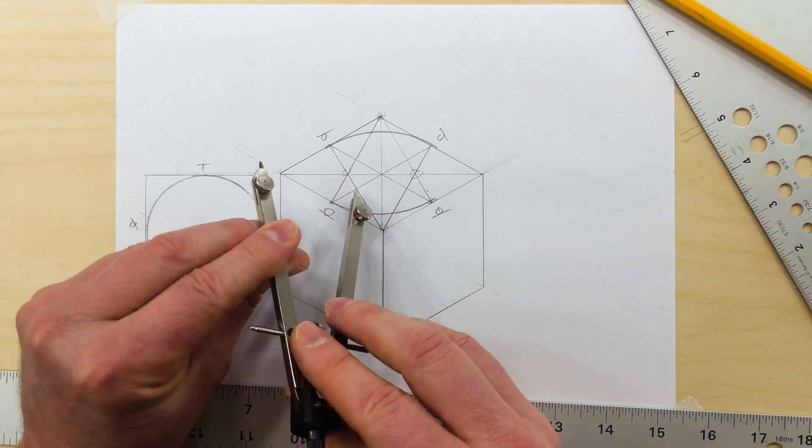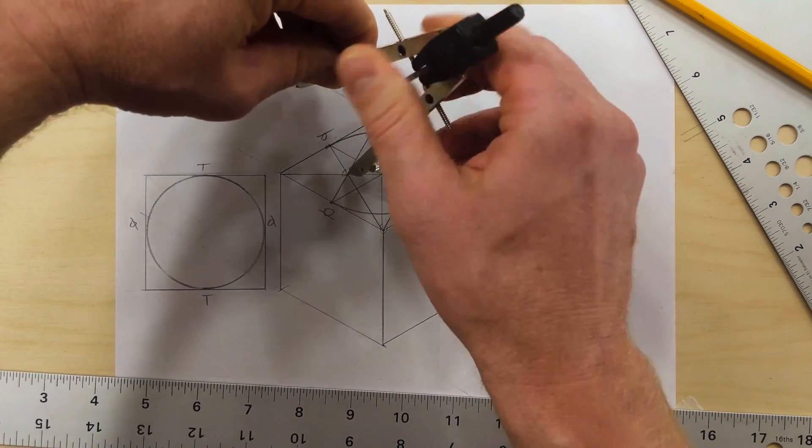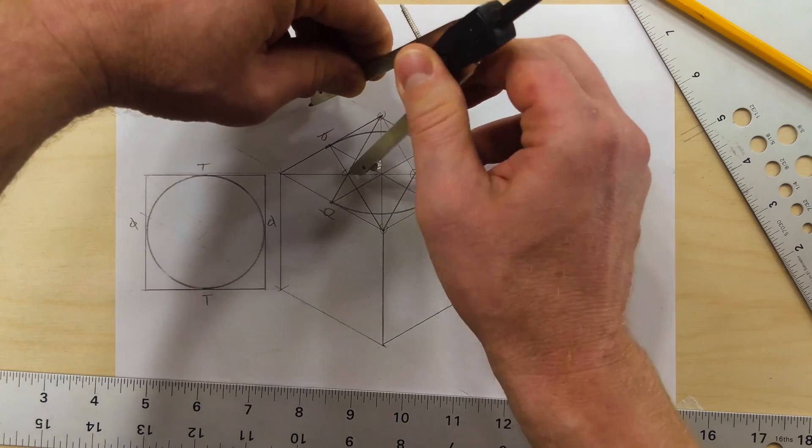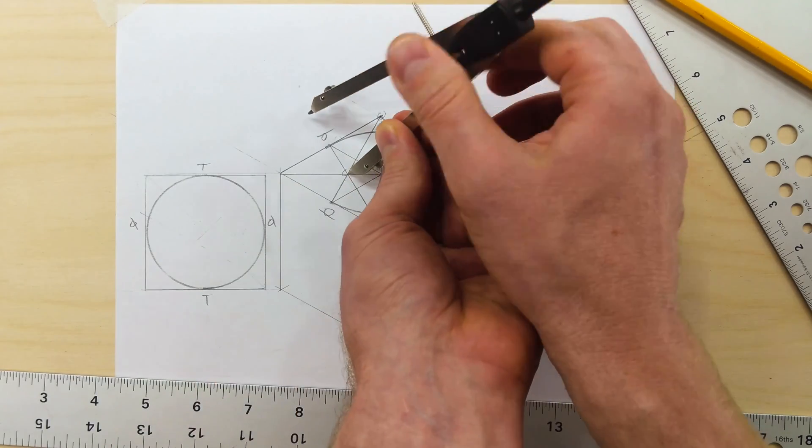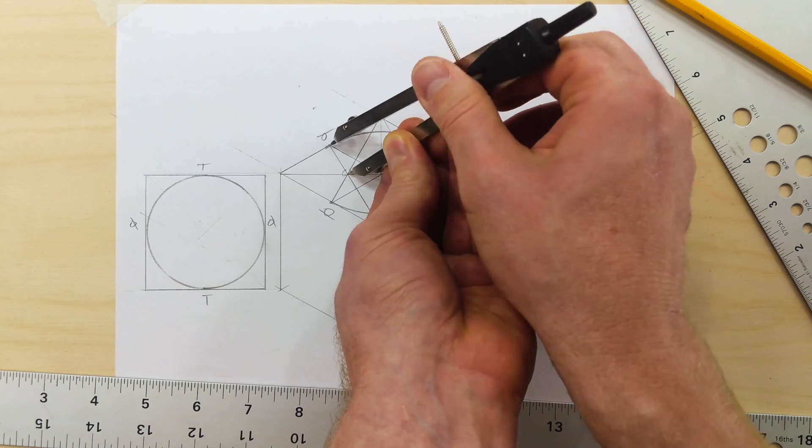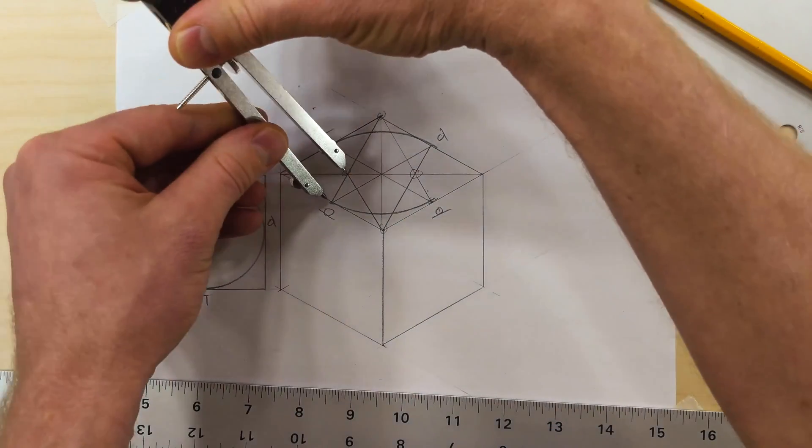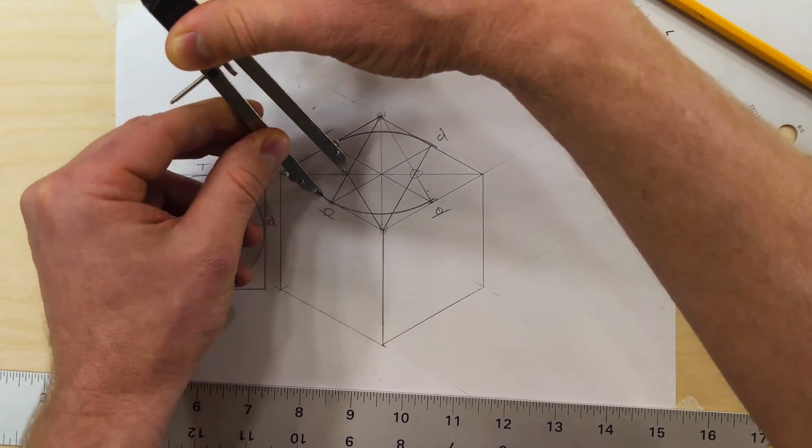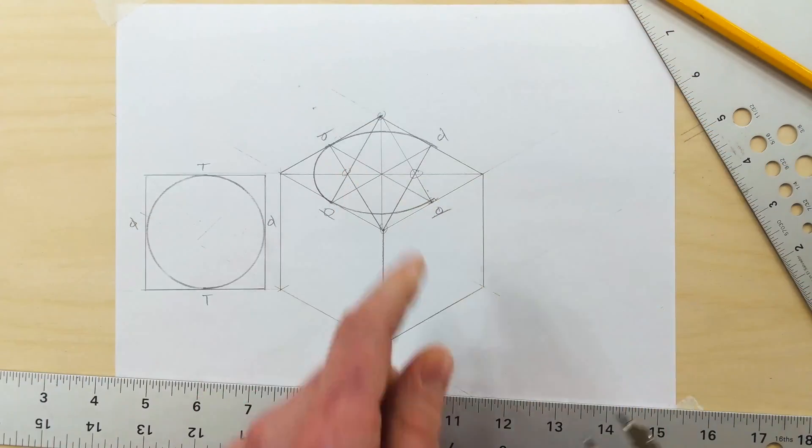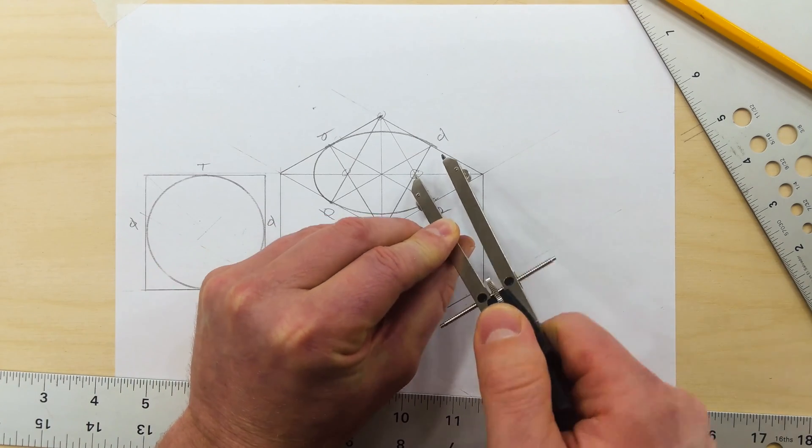Now we can put our center pin here and then we have to bring our compass in until it hits this tangent point. Then we can rotate around and when we draw with our compass that will finish that part of the circle. Then we can bring this back around and draw this arc.